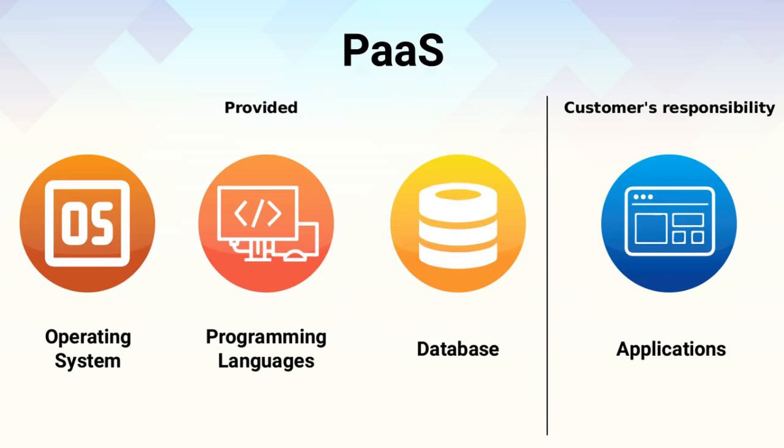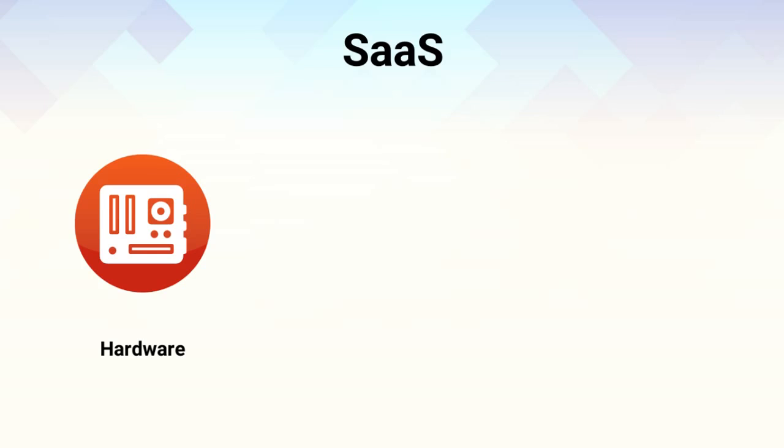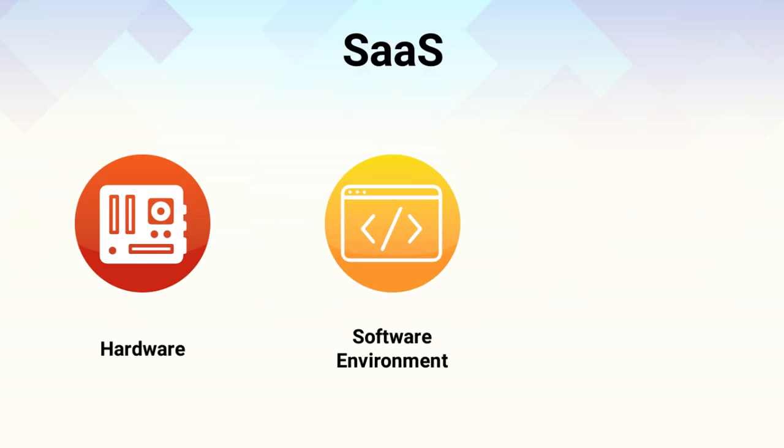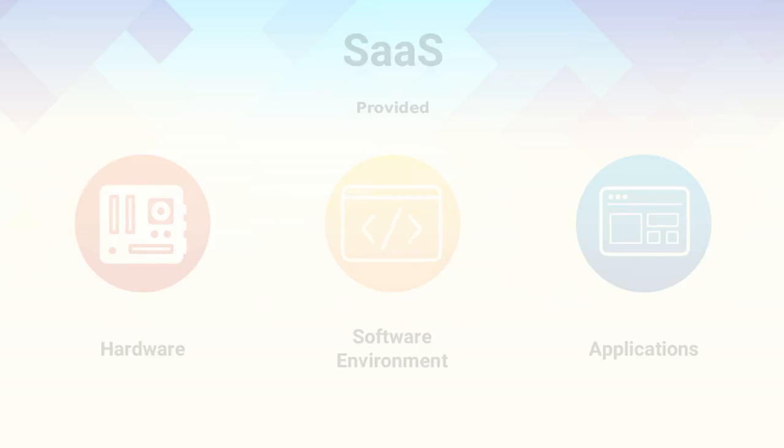SaaS, the software as a service model, is the model in which the cloud service provider takes responsibility for the hardware and software environment, such as the operating system and the application software. This means you can focus on using the application to solve your problem. Dropbox is a very popular software as a service platform.